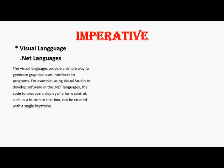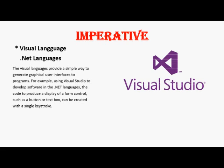For example, using Visual Studio to develop software in the .NET languages, the code to produce a display of a form control such as a button or text box can be created with a single keystroke. These capabilities are now available in all of the .NET languages.